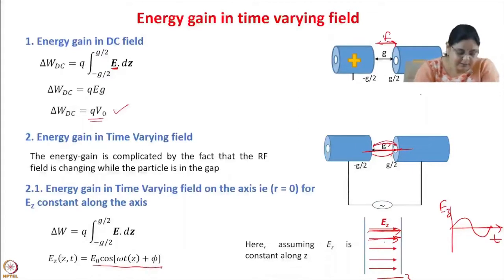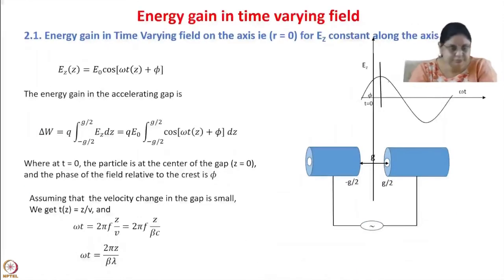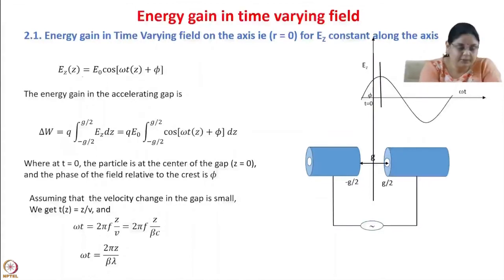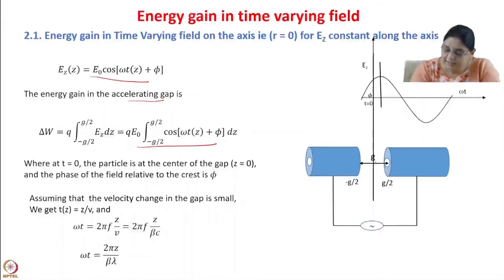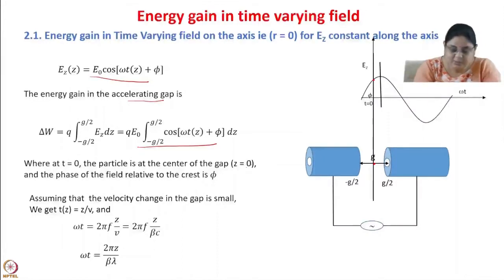Here, Ez is equal to E₀cos(ωt + φ), so there is time variation. At t = 0, the particle is at the center of the gap (z = 0), and φ is the phase of the field relative to the crest. So the particle sees the field E₀cos(φ) at time t = 0.